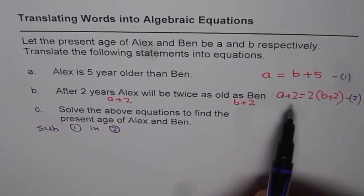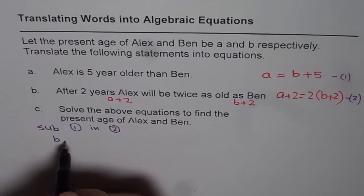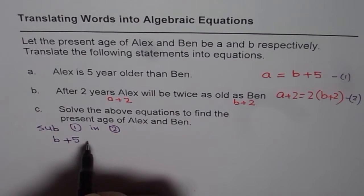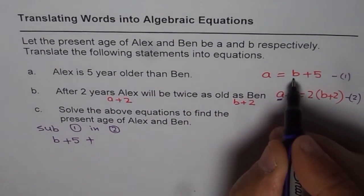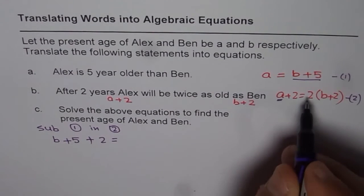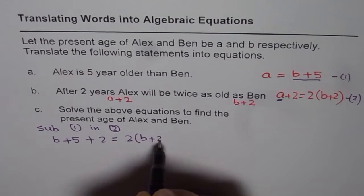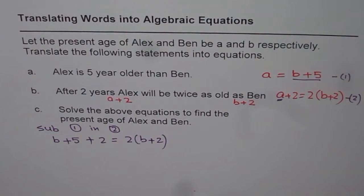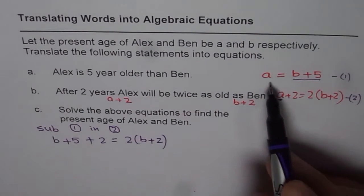So if I do that, that means instead of A, I will write B plus 5. What do I get? I get B plus 5 plus 2 equals to 2 times B plus 2. So that is what we get. So we are using both the equations to solve for the variables A and B.